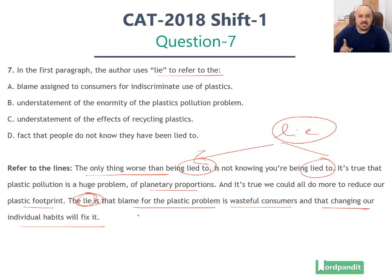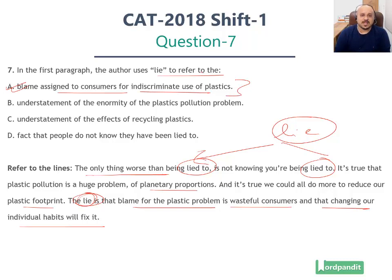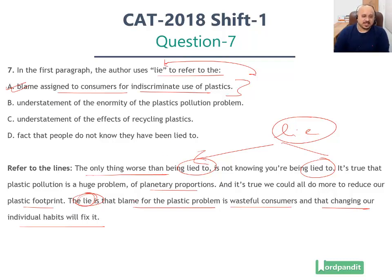This is the lie that is being committed. This is the lie that we are being told — that blame is being assigned to wasteful consumers, which is option A: blame assigned to consumers for indiscriminate use of plastics. This is what 'lie' refers to. Direct fact-based answers — one of the easiest questions you can find in RCs. Option B, understatement of the enormity of the plastic pollution problem, does not fit our context. Remember, the lie is that the blame for the plastic problem is wasteful consumers. Option B is ruled out.